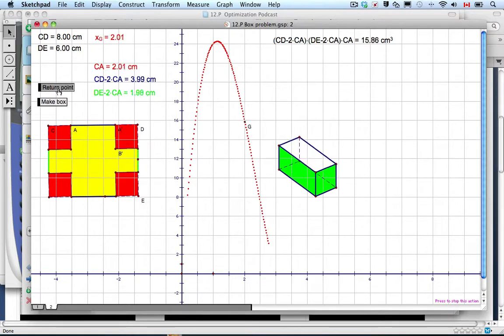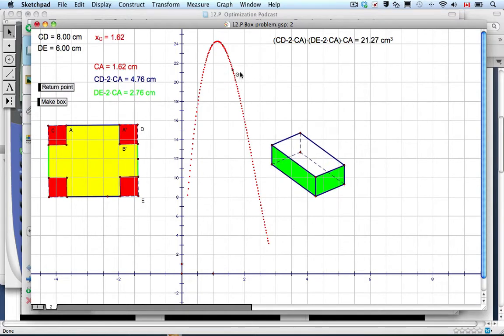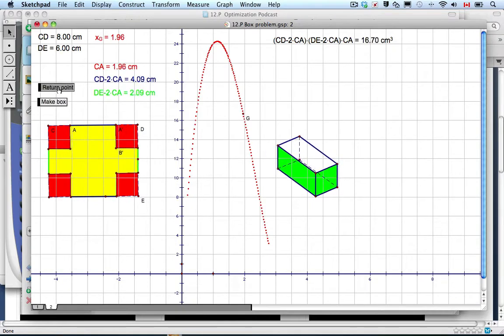And so this point g that's over here is tracing out the volume and so we're looking for a volume that's up around here somewhere to the maximum, which is going to be somewhere around one but we have to use calculus to find out that scenario.